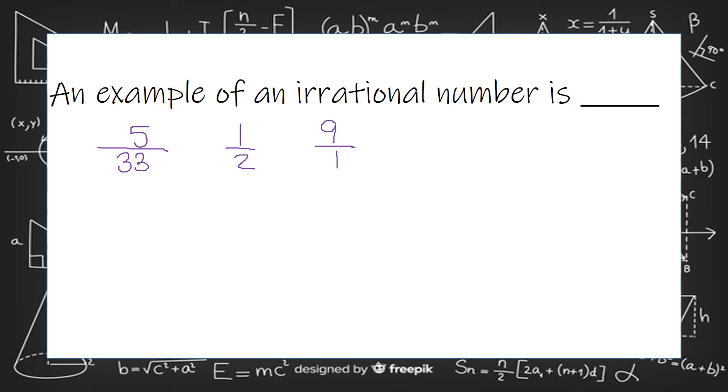Those are rational numbers. Now an irrational number is any number that cannot be put into a fraction. A lot of times you see those with square roots of any number that's not a perfect square.